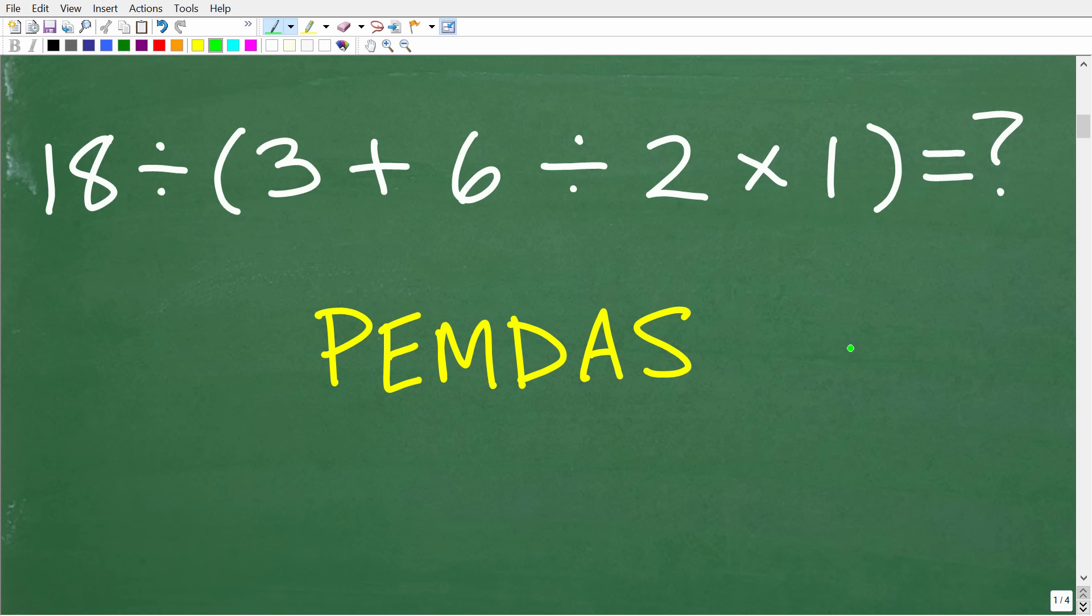So, how do we know the correct order to do a math problem? Well, we need to understand this acronym right here called PEMDAS. So, what we're talking about here in terms of math is something called the order of operations. So, in mathematics, things like addition, subtraction, multiplication, and division, and powers, these things right here are what we call mathematical operations. So, how do we know which ones to do first? Well, again, we need to reference our lovely little acronym here called PEMDAS.